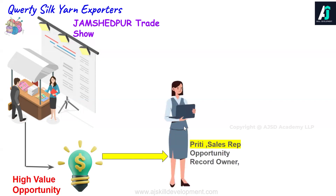This high-value opportunity is in the hands of sales rep Prithi — she is the record owner for this particular opportunity. She is very happy because she got this high-value opportunity and wants to convert it to Closed Won. Only when the stage becomes Closed Won will the expected revenue be higher. She has been conversing with the client and has already compromised on the deal, but she cannot close it without getting an approval from her senior management.